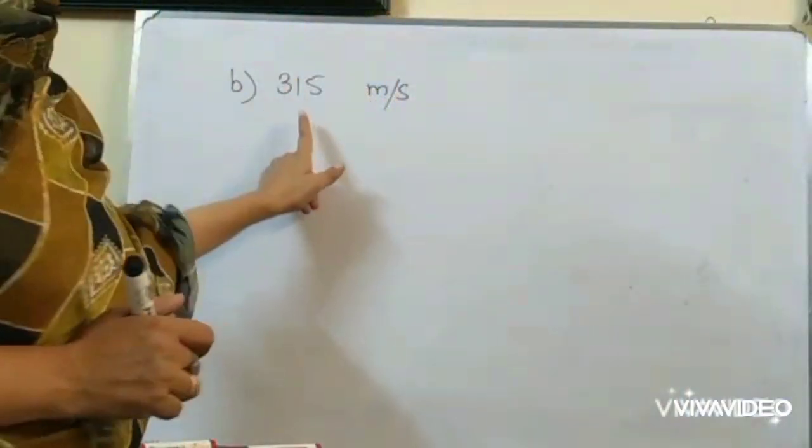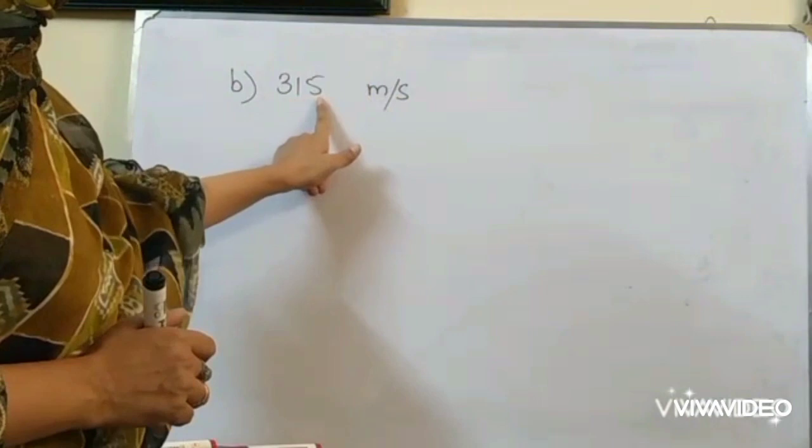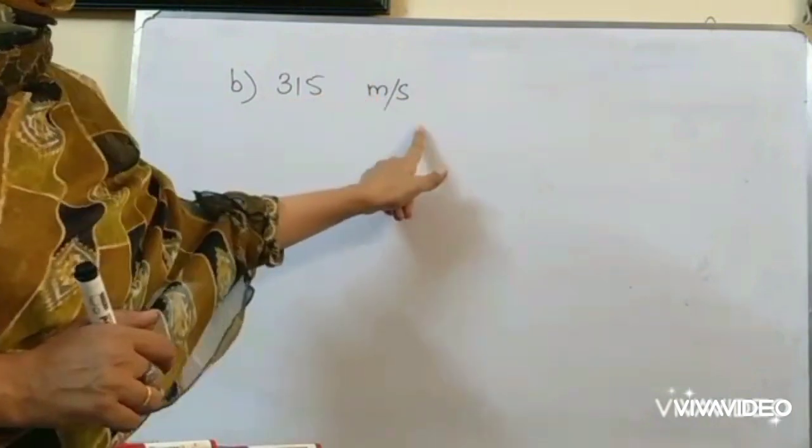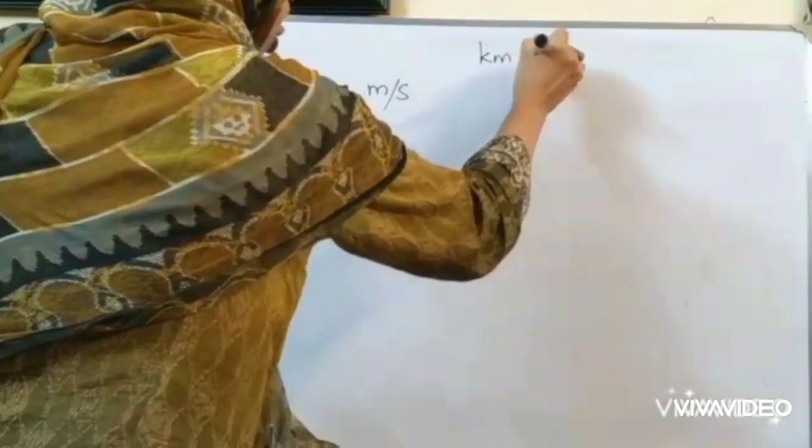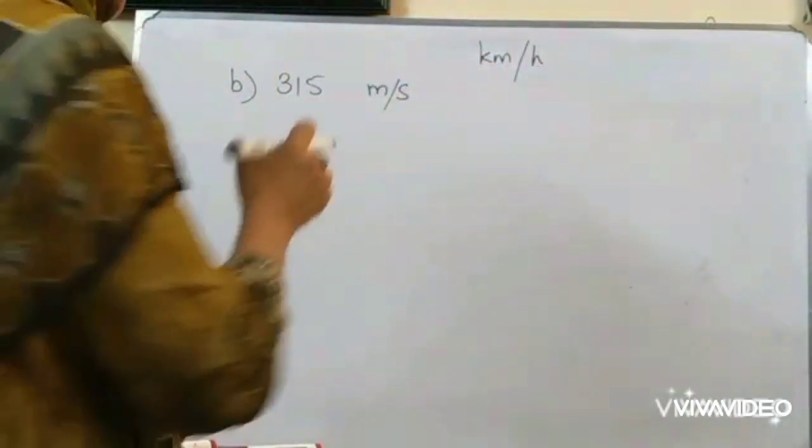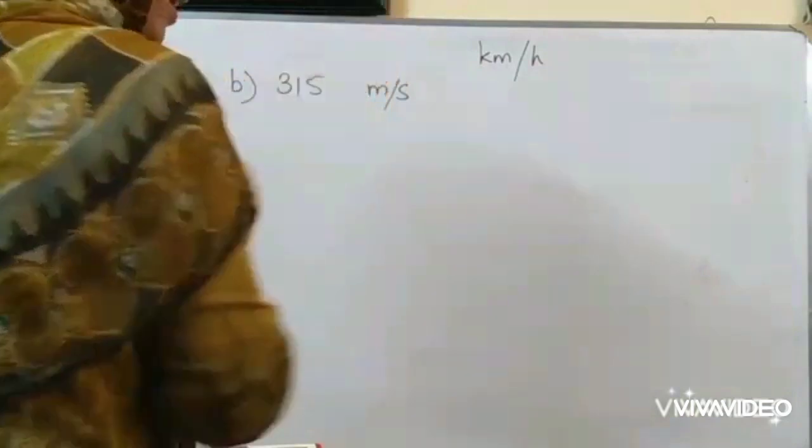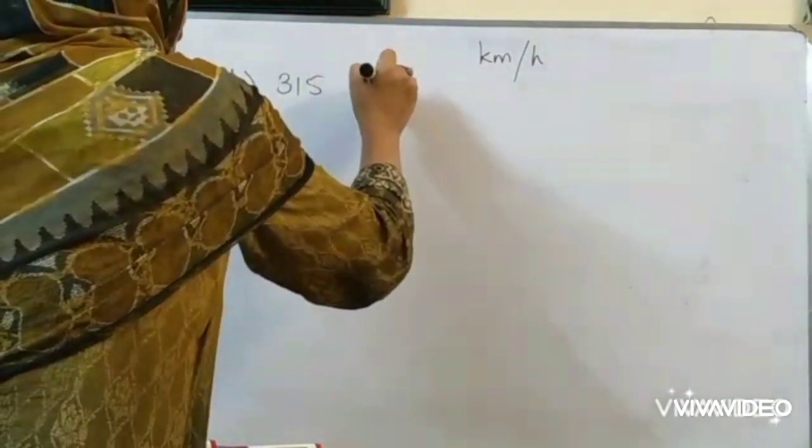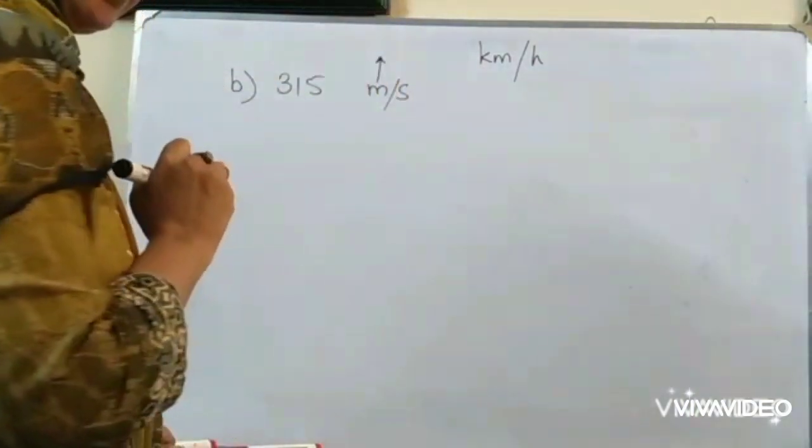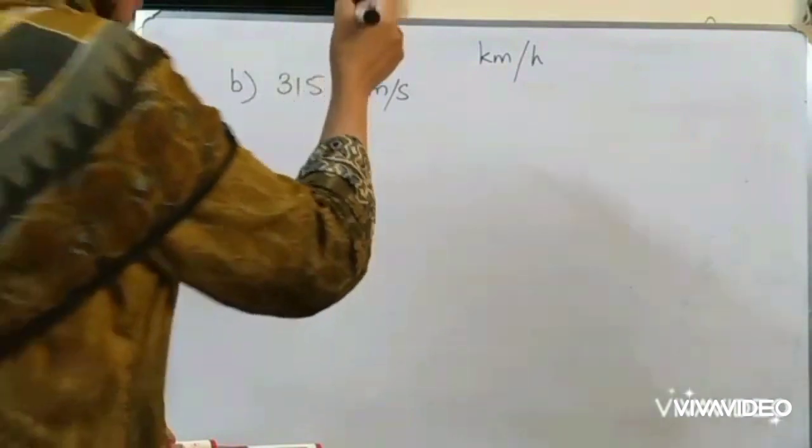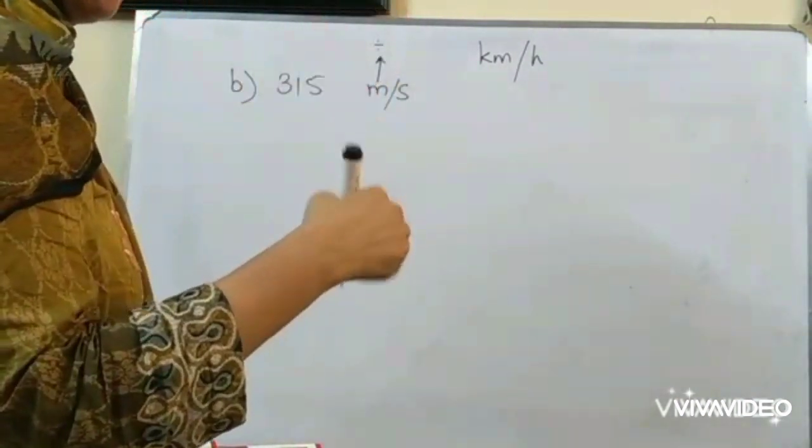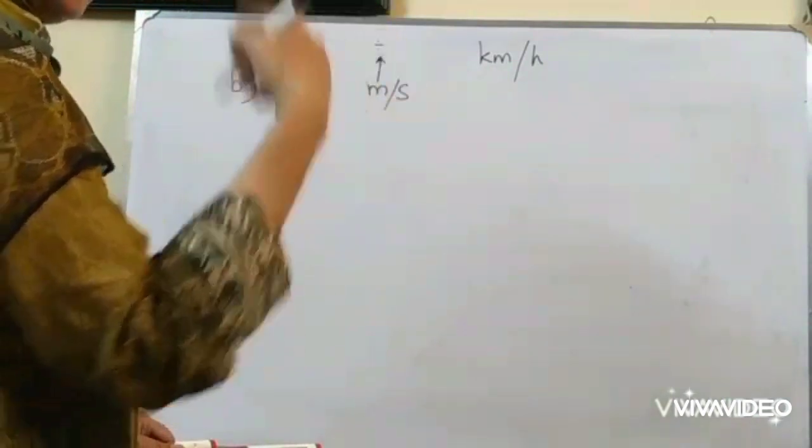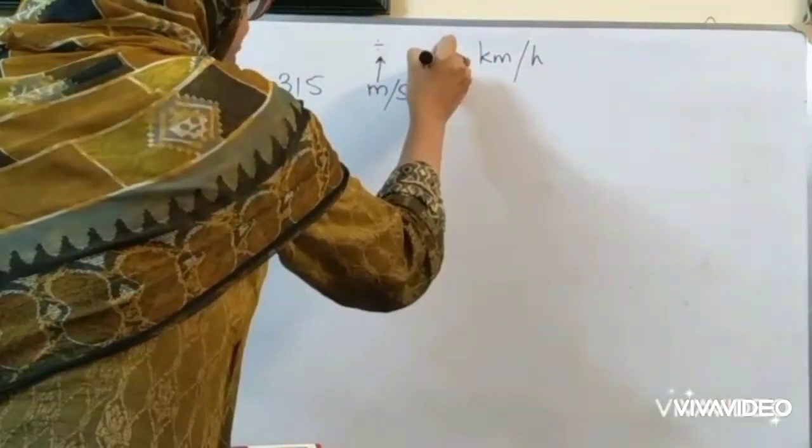Now look at the B part. You have to convert 315 meter per second into kilometer per hour. So, as according to the formula, meters are to be converted into kilometers. It means from smaller value to the bigger value. Going upward means division. And seconds will be converted into minutes first and then into hours. So, we will go 2 times.